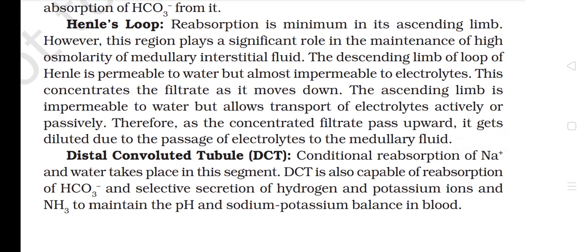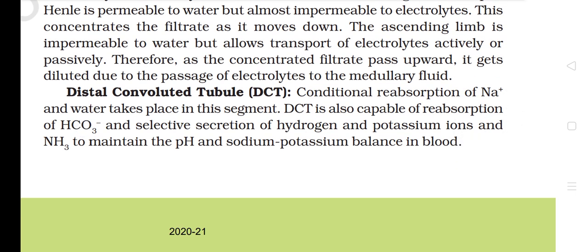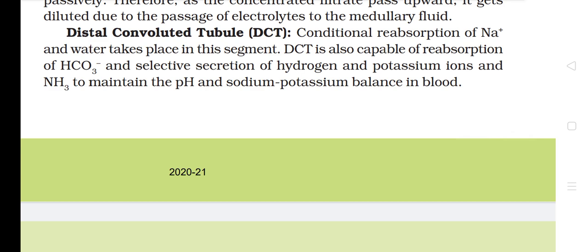Henle's Loop: Reabsorption is minimum in the ascending limb; however, this region plays a significant role in maintaining the highest osmolarity of medullary interstitial fluid. The descending limb of Henle's loop is permeable to water but almost impermeable to electrolytes, concentrating the filtrate as it moves down. The ascending limb is impermeable to water but allows transport of electrolytes actively or passively — so as the concentrated filtrate passes upward, it gets diluted due to the passage of electrolytes to the medullary fluid. In the DCT, conditional reabsorption of Na+ and water takes place; it is also capable of reabsorbing bicarbonate and secreting hydrogen and potassium ions and ammonia to maintain pH and sodium-potassium balance in blood.